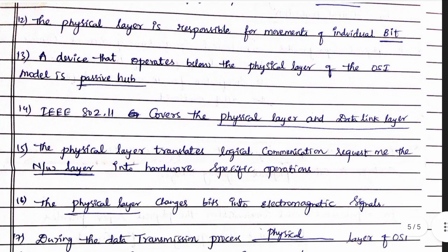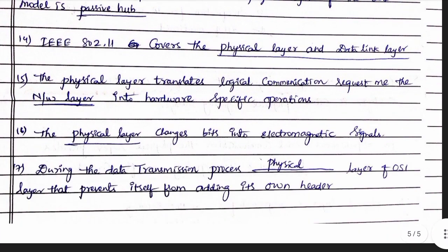The physical layer is responsible for movement of bits and changes bits into electromagnetic signals. During the transmission process, the physical layer of the OSI model prevents itself from adding its own header.